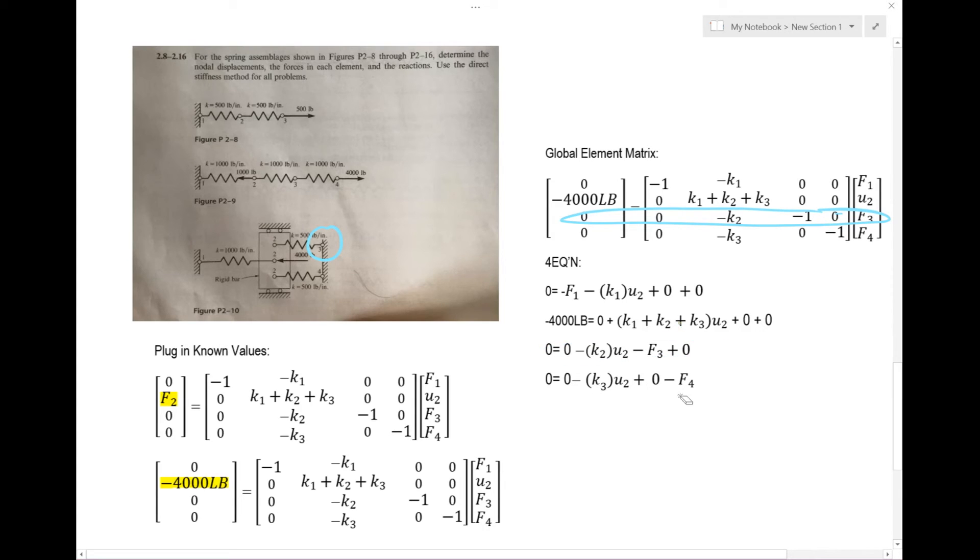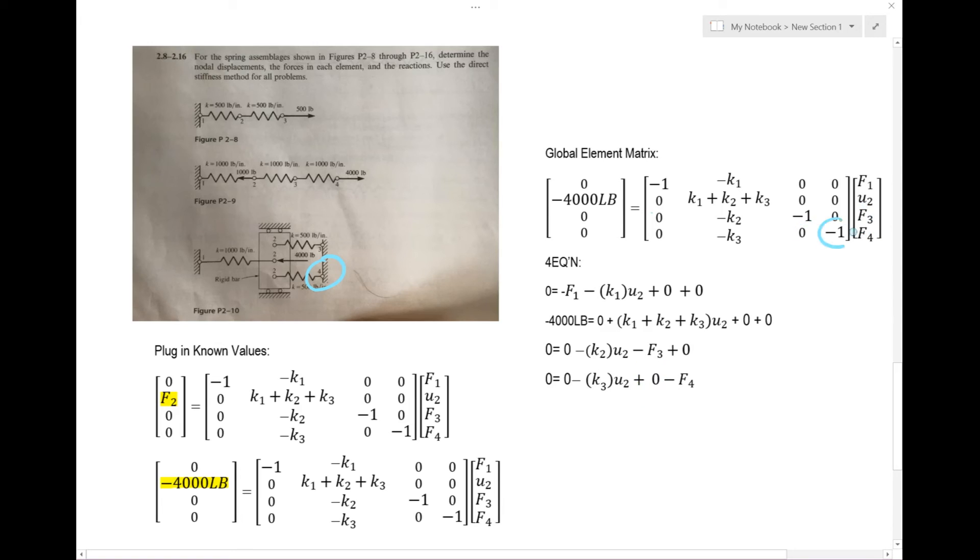For F3, I go here and here — that gives me this value; here and here gives me this; here and here gives me this — and you can see how the negative one plays into the equation; then the last entry gives me this zero. For F4, that's represented at the bottom row. Here and here gives me this; here and here gives me this; here and here gives me this one; and the negative one gives me this force. So that's why these negative ones are there — it works out with the equation.